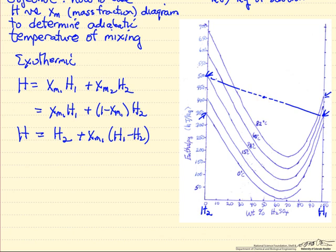If it's adiabatic, we expect that the enthalpy of the mixture is going to be equal to the enthalpy of the starting components. The difference is this is not at the same temperature, so this is going to be at a higher temperature than the enthalpies of our starting materials.